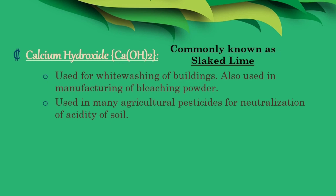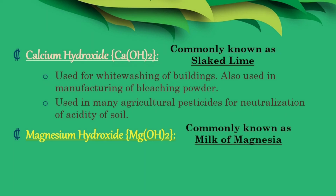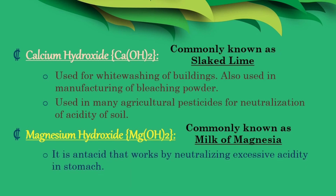Excessive use of fertilizers sometimes makes soil acidic, which is not good for the growth of plants. Farmers add slaked lime, or calcium hydroxide, to the soil to neutralize the acid. Number four: magnesium hydroxide. It is also known as milk of magnesia because of its milk-like appearance. Magnesium hydroxide is a wonderful antacid that works by neutralizing excessive acidity in the stomach.